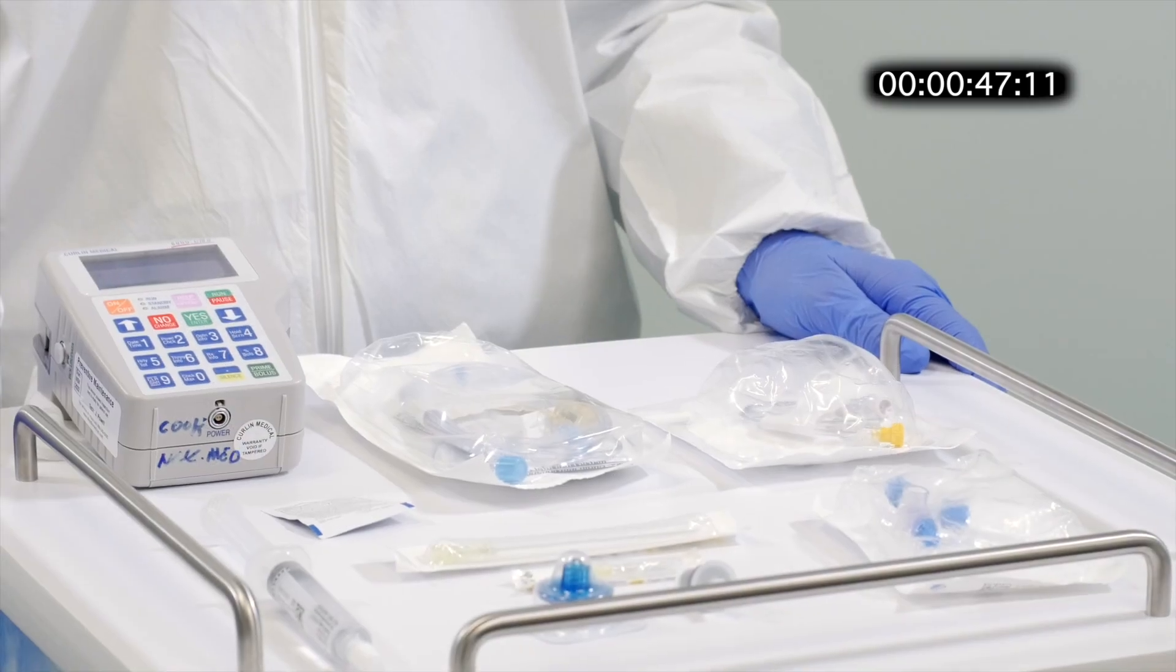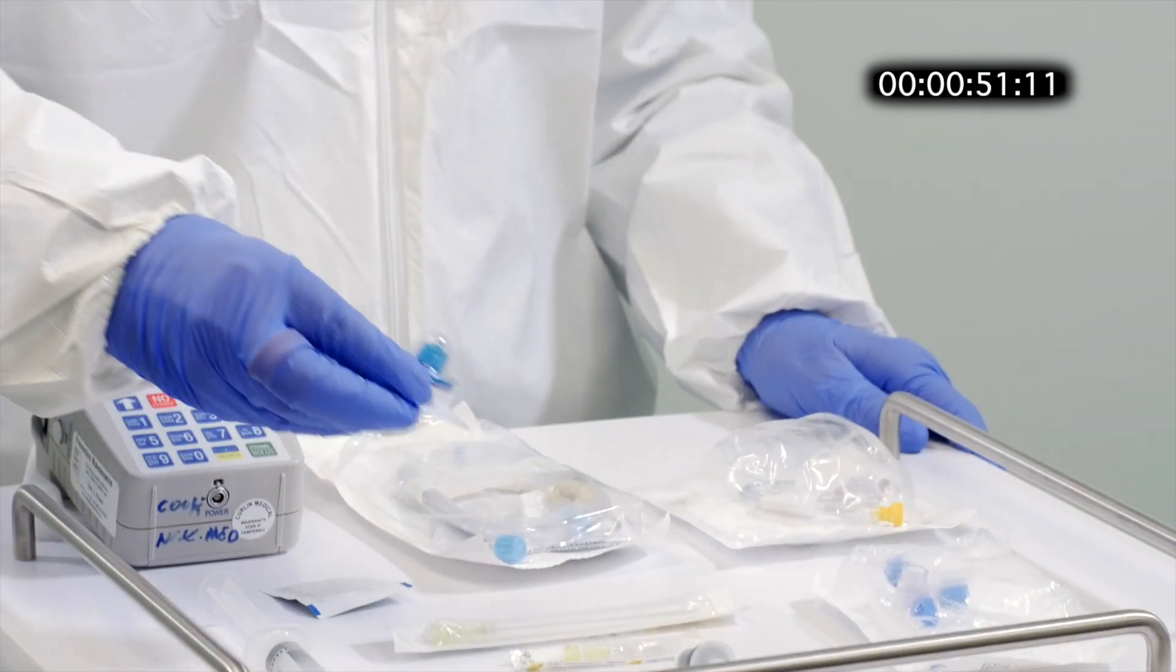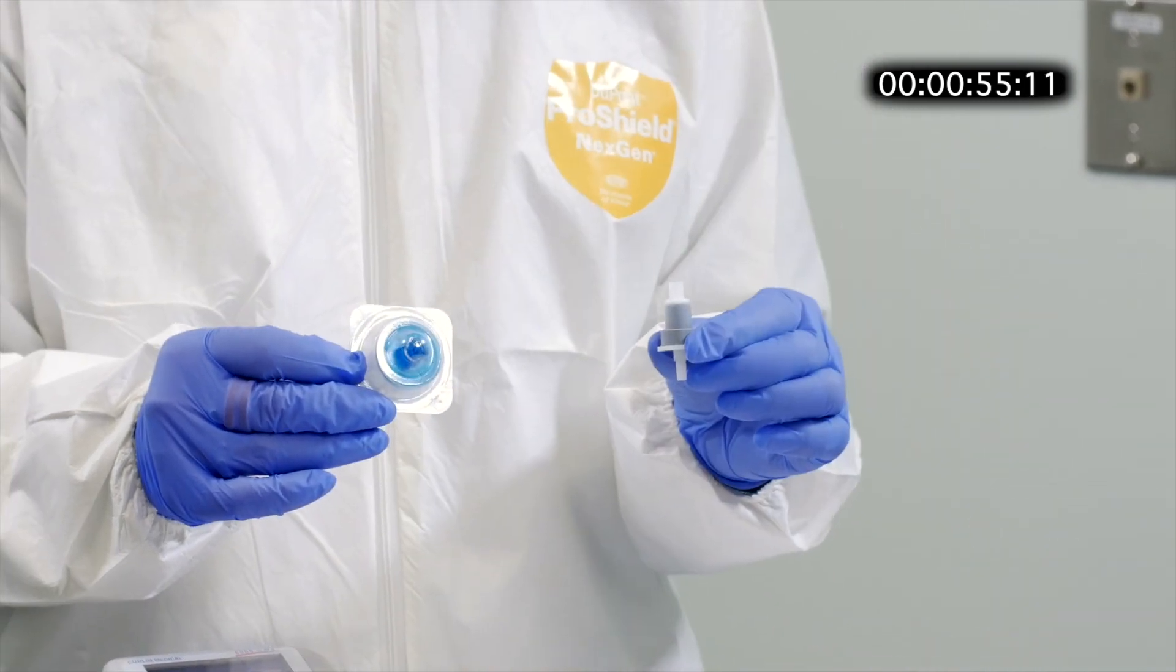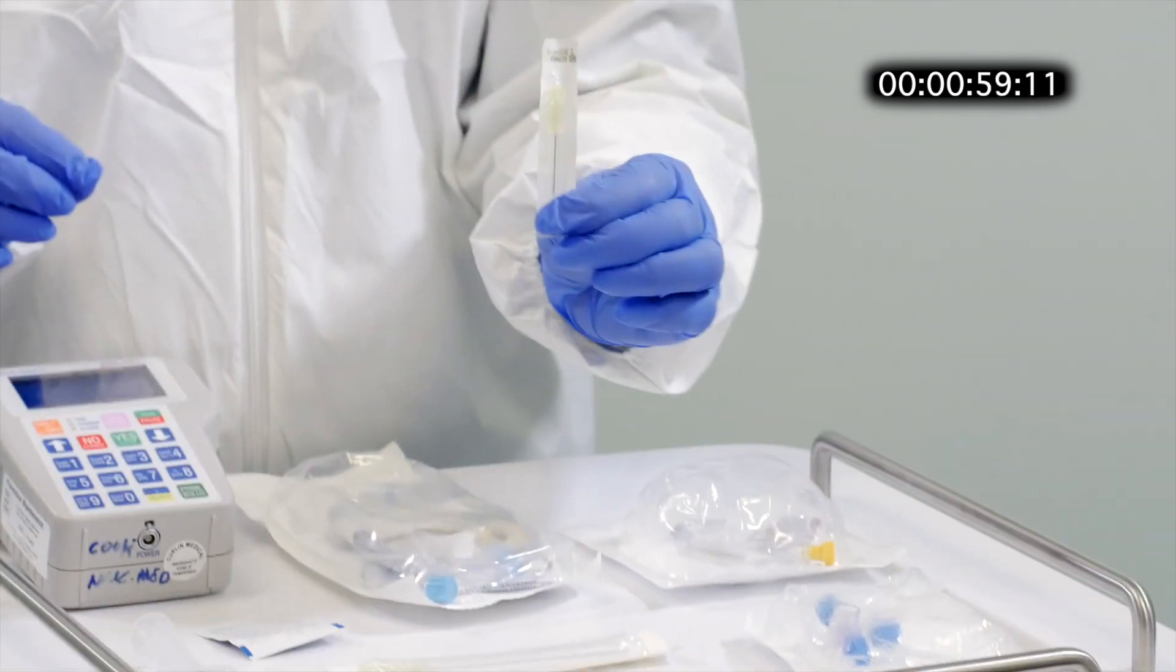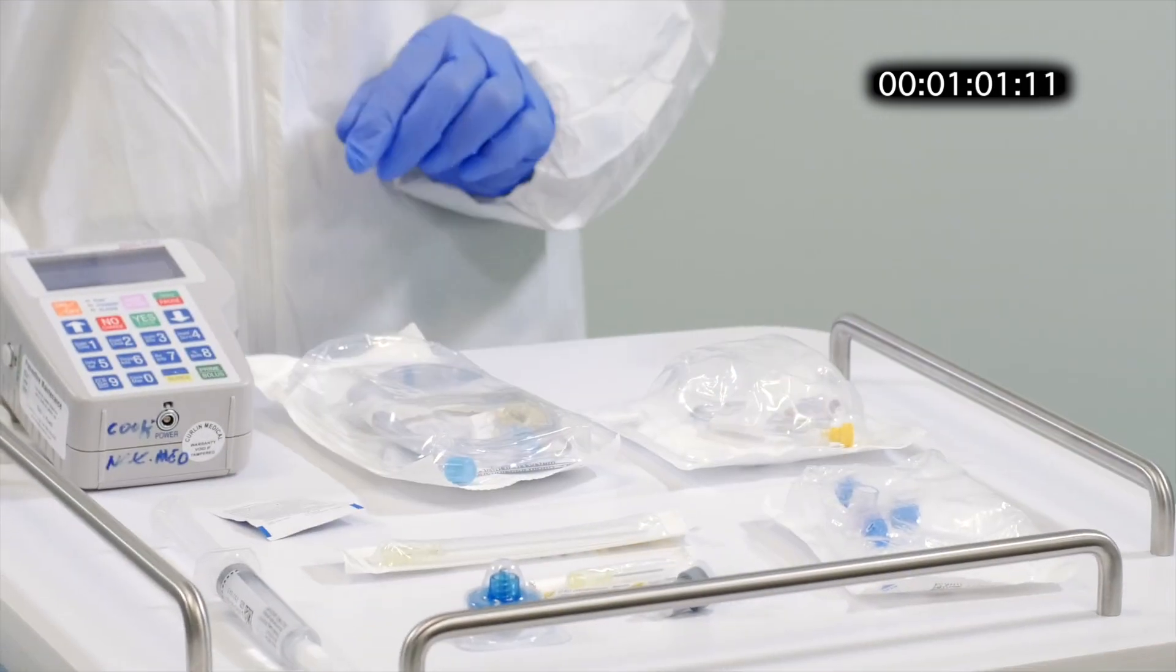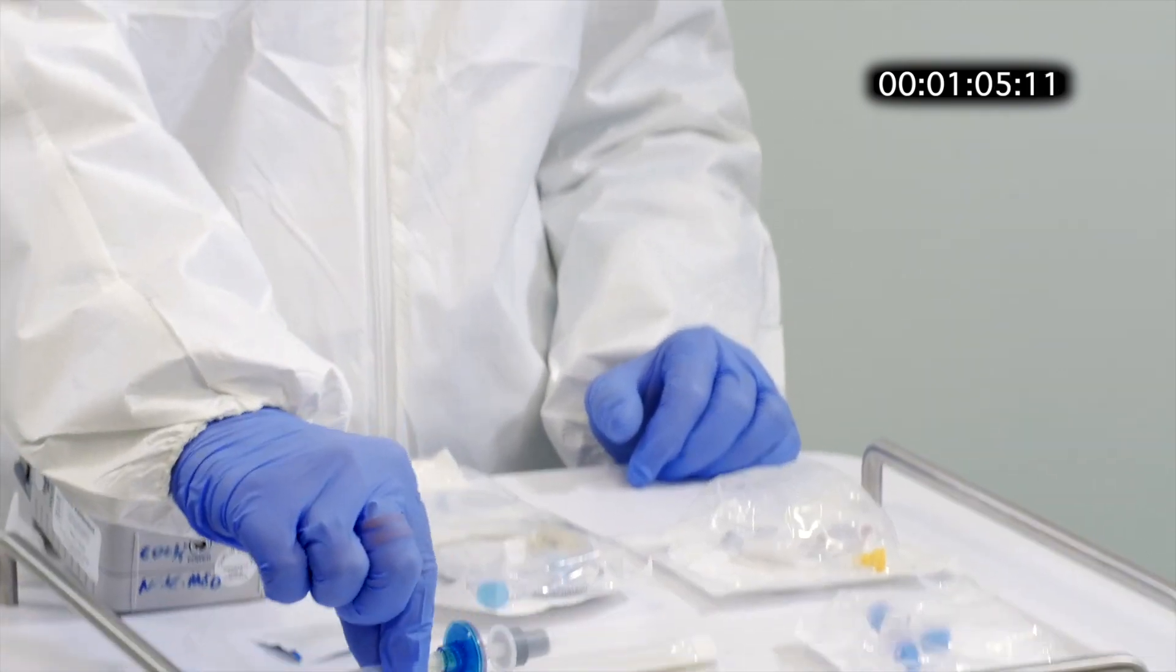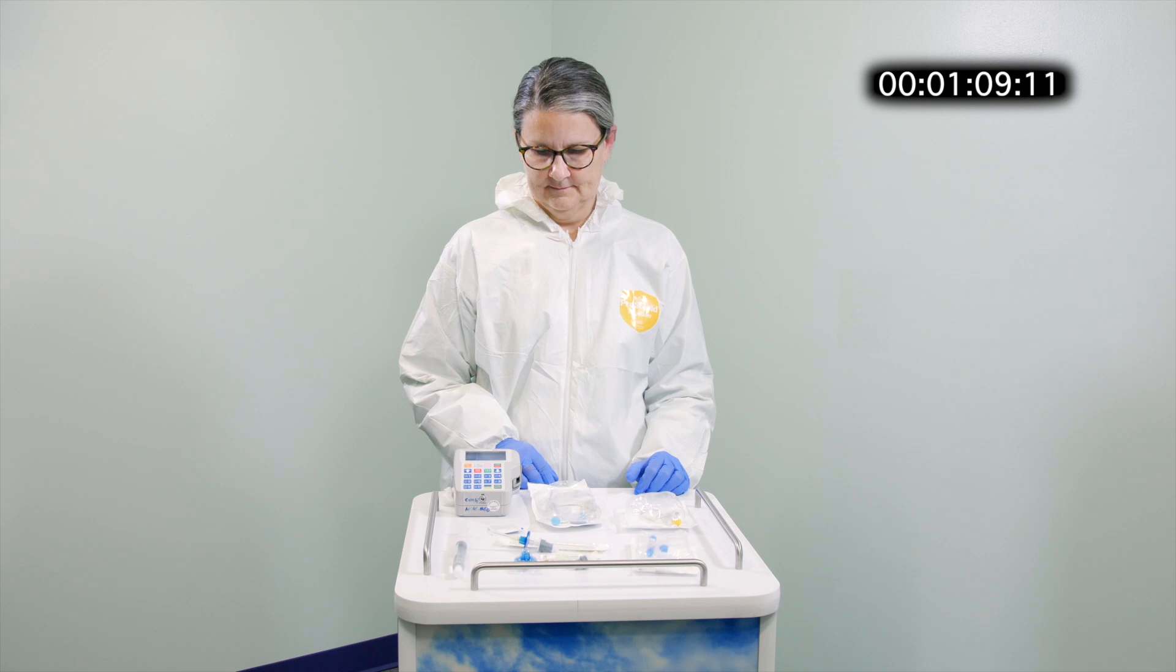The first step is to assemble the vent unit. That is done by first taking the Millipore filter and the charcoal filter and the needle. The finished kit will look like that. There is only one way to assemble that correctly so there is no way to make a mistake.